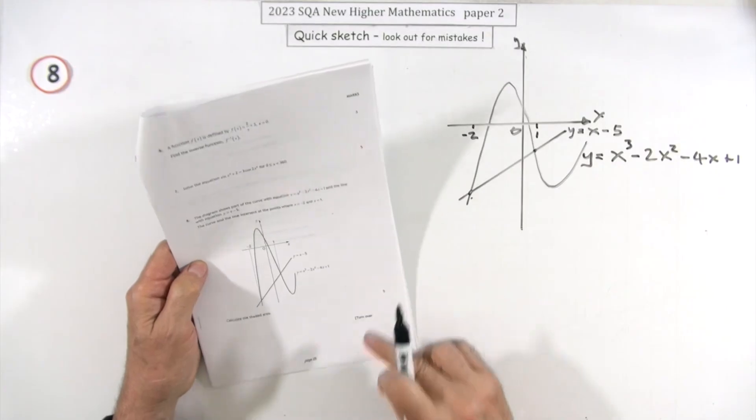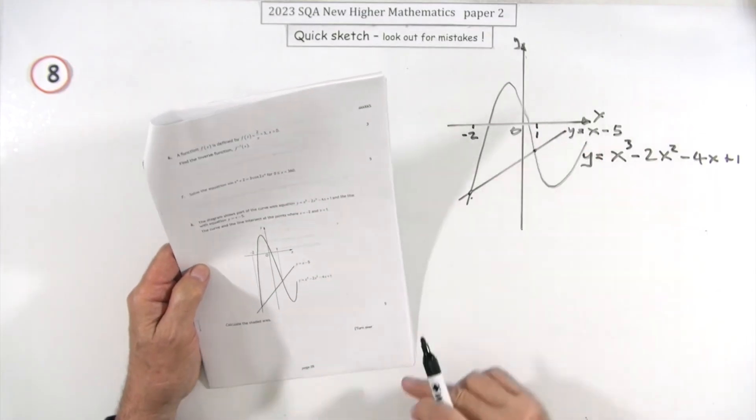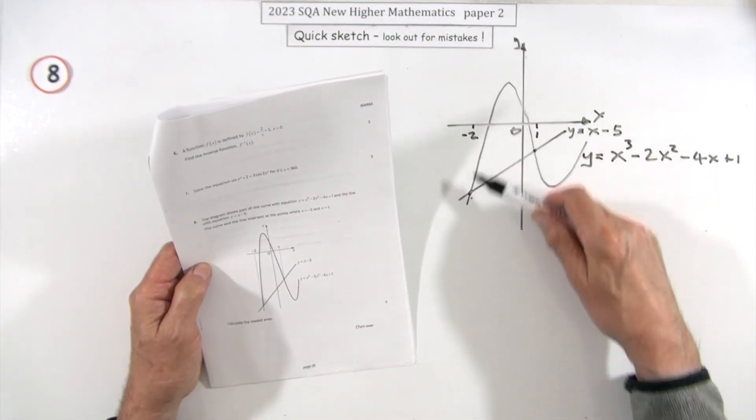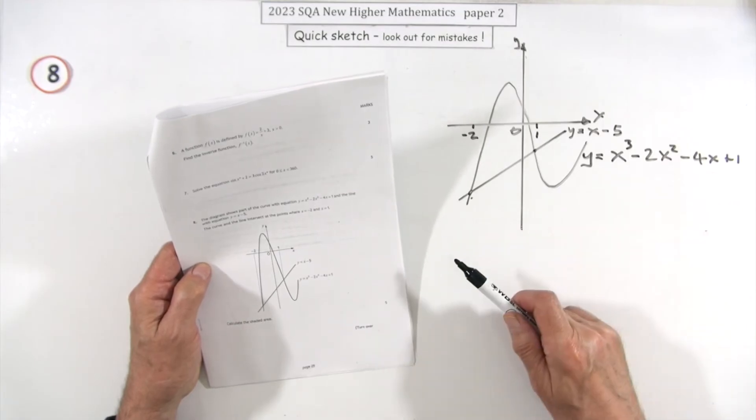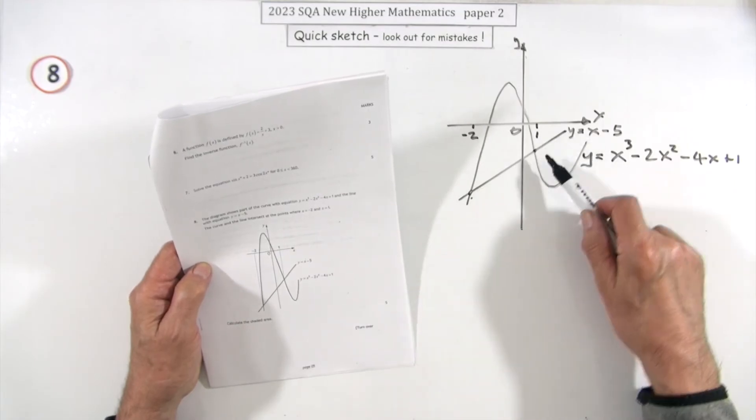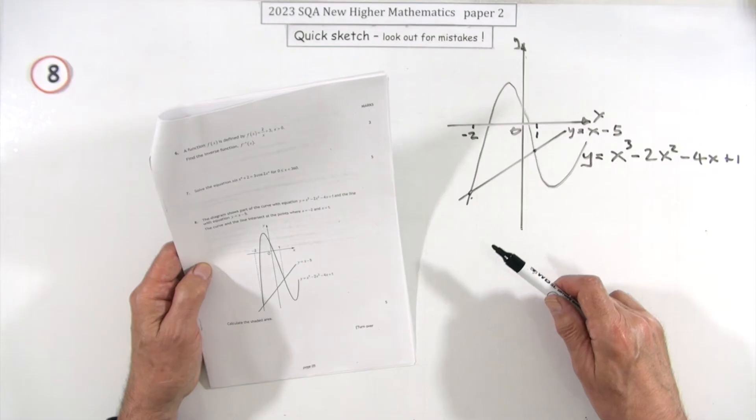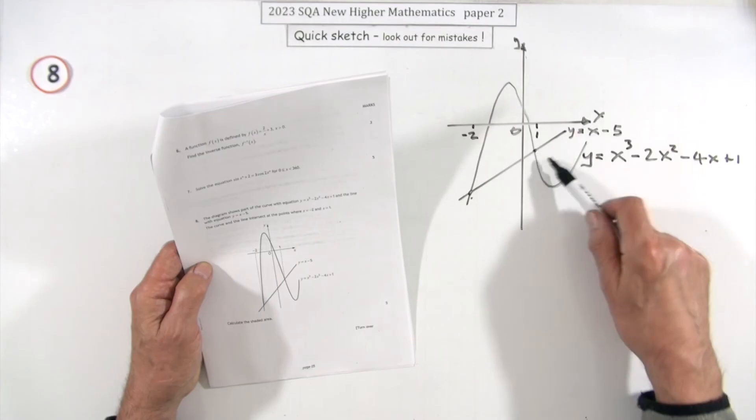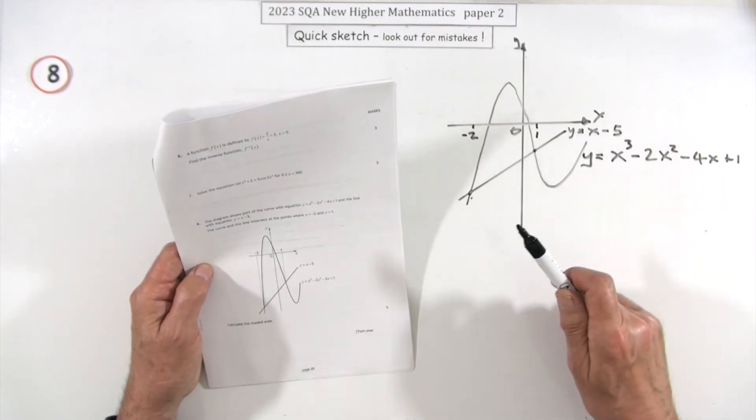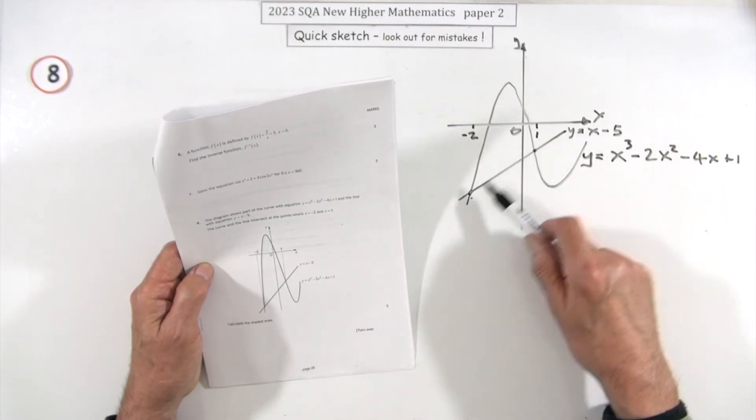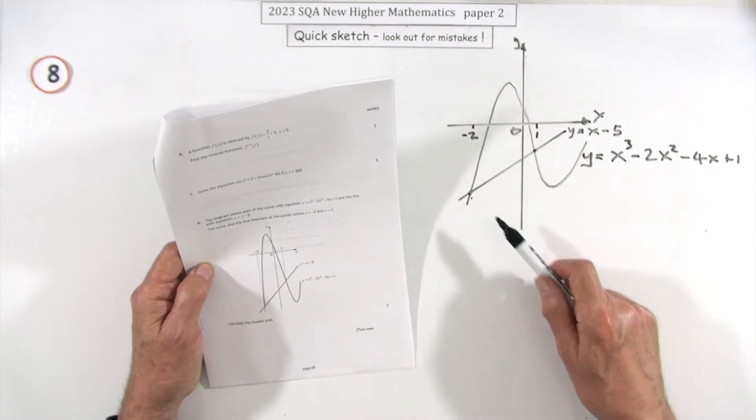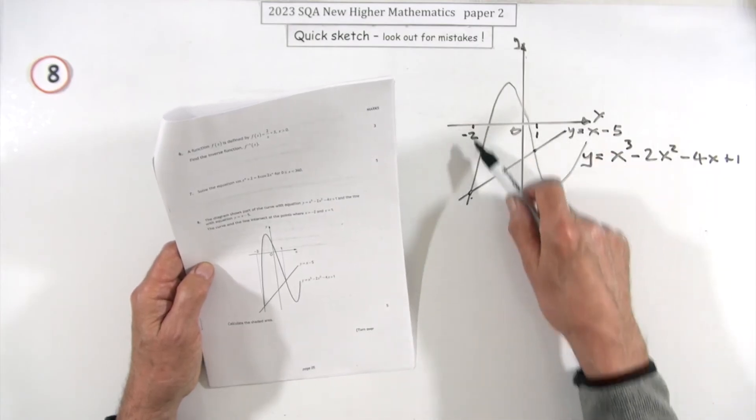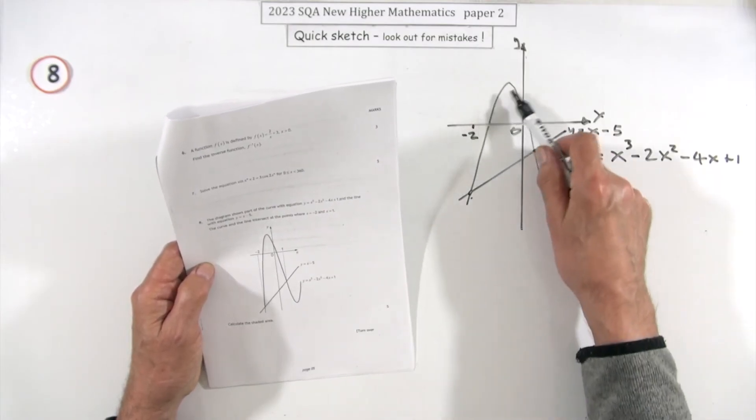So number eight for five marks: area between two curves. This diagram shows this cubic here—there's its equation there—being intersected by a line—there's its equation there. You have to find the area contained, or the first portion of the area contained between them, because there'll be another bit over here. You're looking for this part, and it tells you the points of intersection. You don't need to work them out; it gives you the relevant ones—the x-coordinates. Calculate this area here.